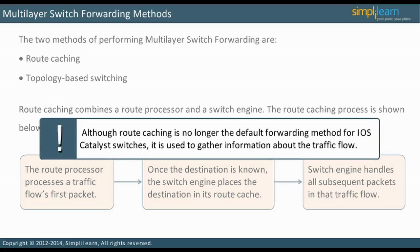Route caching is no longer the default forwarding method for IOS Catalyst switches. However, it is still used to gather traffic flow information, so it is important to understand how the processing occurs.